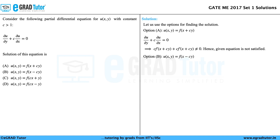Let us consider Option B, which says u(x, y) = f(x - cy). The given equation is ∂u/∂y + c·∂u/∂x = 0. Then ∂u/∂y becomes f'(x - cy)·(-c), and c remains as it is.